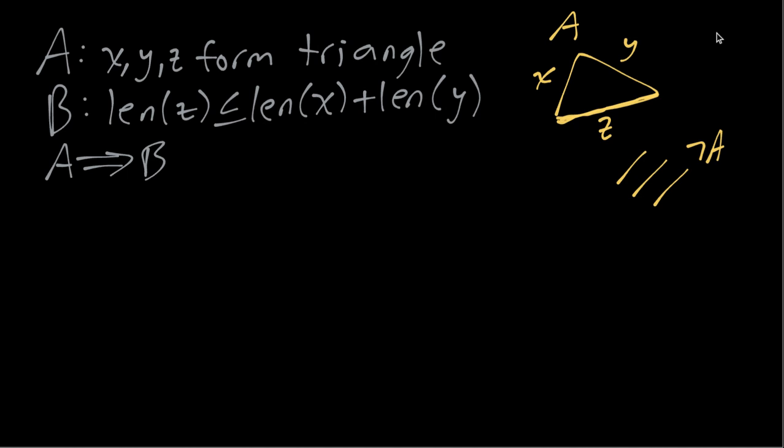If we do have three line segments that form a triangle then the length of one of them has to be less than or equal to the sum of the other two lengths.